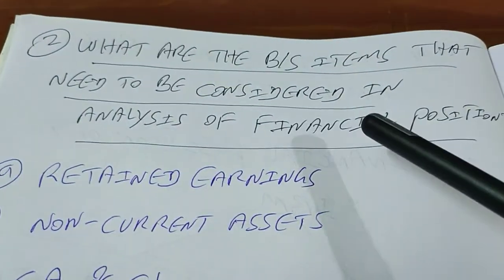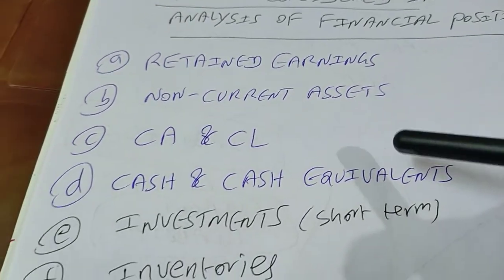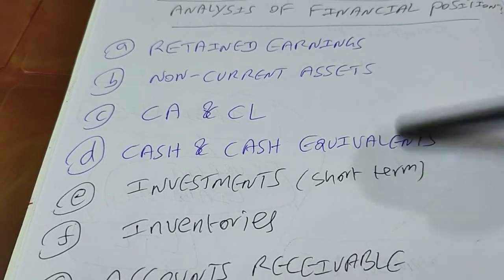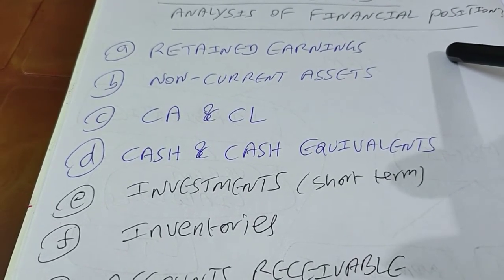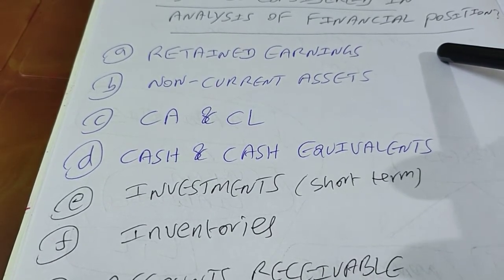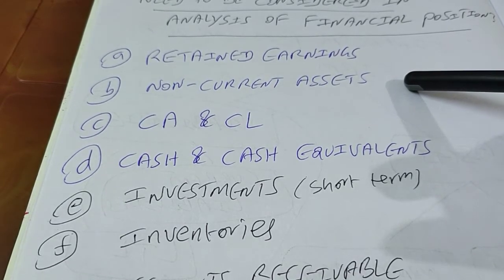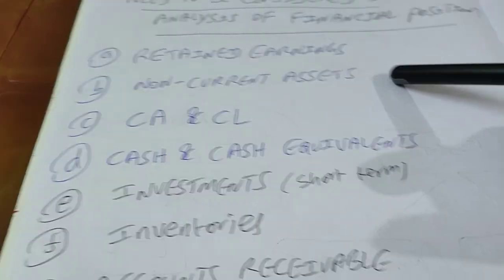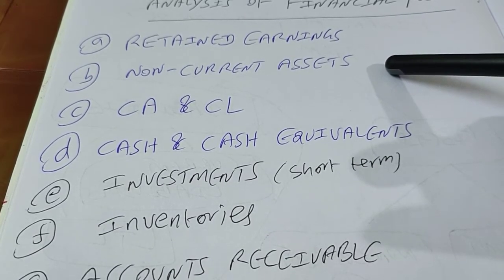The second question is: what are the balance sheet items that need to be considered in the analysis of the financial position of a firm? These are the line items visible in a typical balance sheet. You can be a lender — a banker with a loan proposal from the company — wanting to know whether you can lend money. You can be a creditor — a supplier of material — wanting to know whether you can sell on credit.